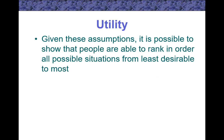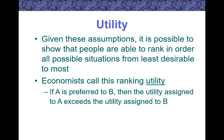Utility: Given these assumptions, it is possible to show that people are able to rank and order all possible situations from least desirable to most. Economists call this ranking utility. If A is preferred to B, then the utility assigned to A exceeds the utility assigned to B.